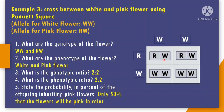For question 3, what is the genotypic ratio? The answer is 2 is to 2, because we have 2 RW and 2 WW. For question 4, the phenotypic ratio is also 2 is to 2, since we have 2 white flowers and 2 pink flowers. For question 5, state the probability in percent of offspring inheriting pink flowers: the answer is 50%, because we have 2 RW boxes in the Punnett square, and 2 times 25% equals 50%.